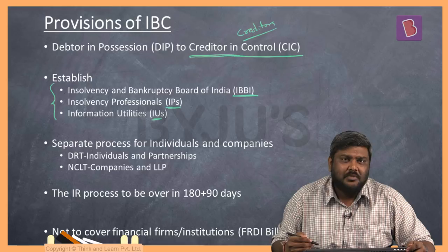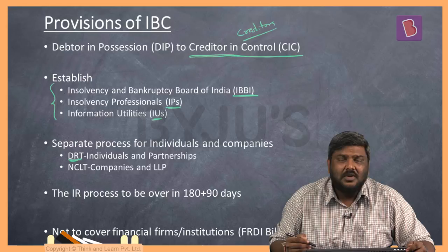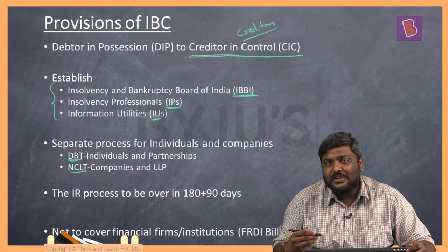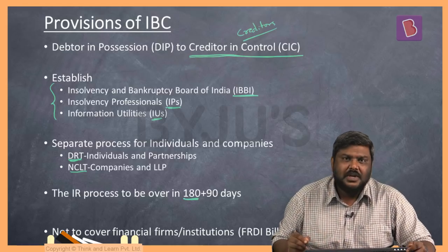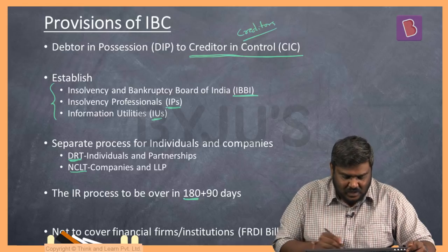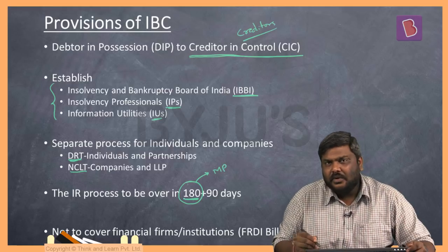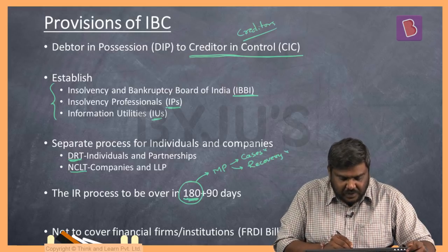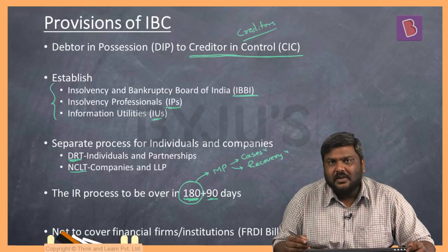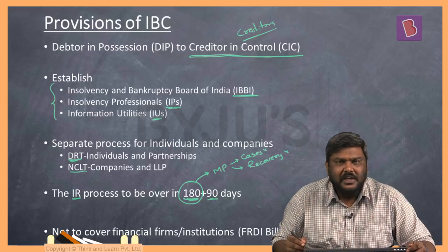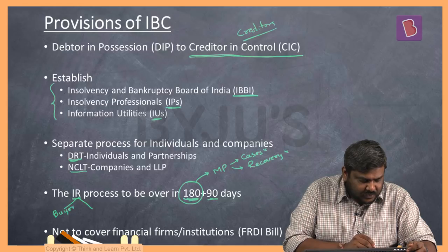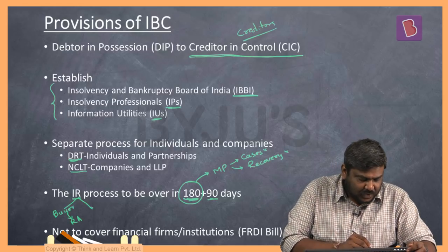Apart from these three authorities, there are two quasi-judicial bodies: the Debt Recovery Tribunal, which handles insolvency resolution cases of individual borrowers, and the National Company Law Tribunal, which handles insolvency resolution cases of corporate borrowers. The insolvency resolution must be completed within a time period of 180 days, also referred to as the moratorium period. During this moratorium period, no further cases will be accepted and no recovery proceedings can be conducted against the company. Insolvency resolution means creditors decide to either sell the company to a new buyer — a resolution applicant — or liquidate the company.